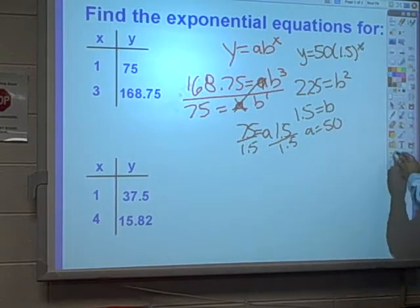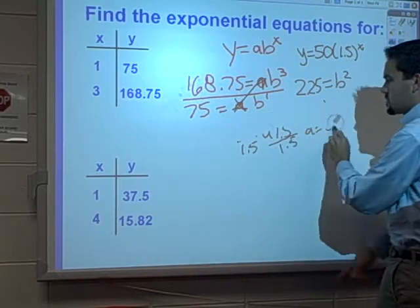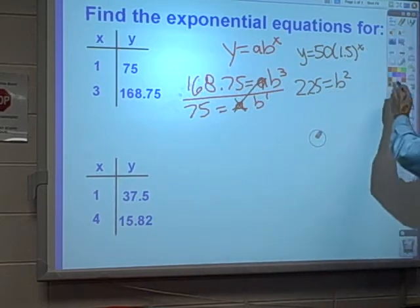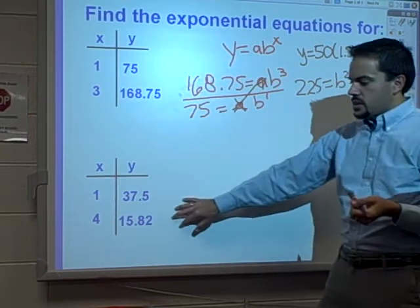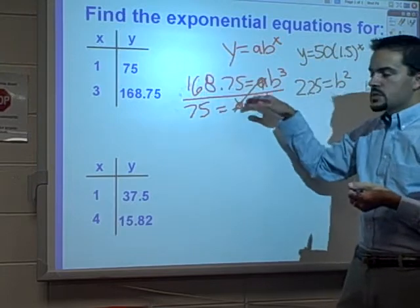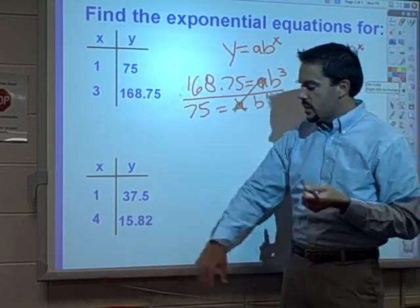Now what I'm going to do is I'm going to get rid of this work so I can work down here in this second problem. I have room for that. Let's take a look at the data points down here. I'm going to go through the same exact process that I did here. Start by making this fraction so I can cancel stuff out with this given information.